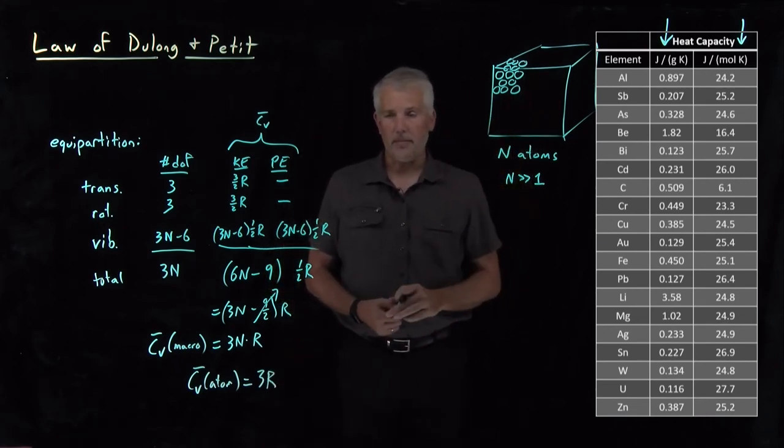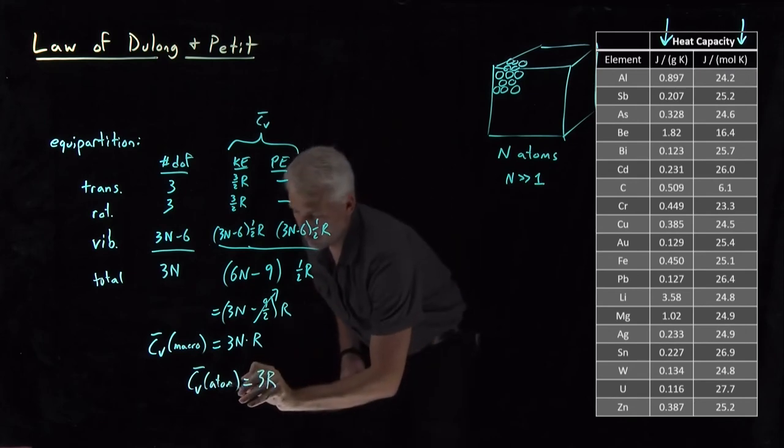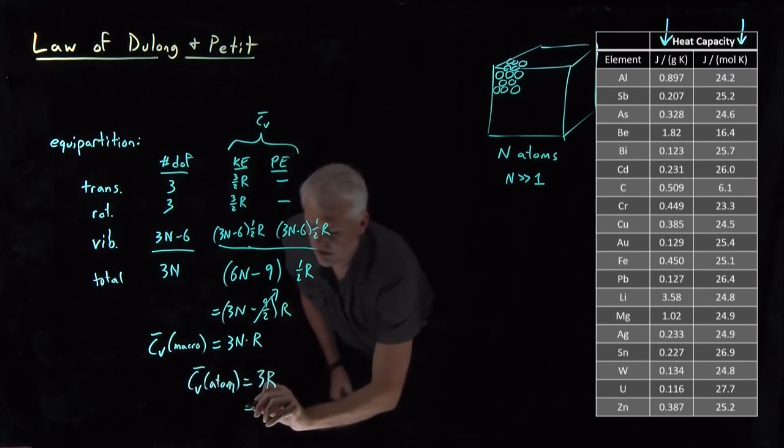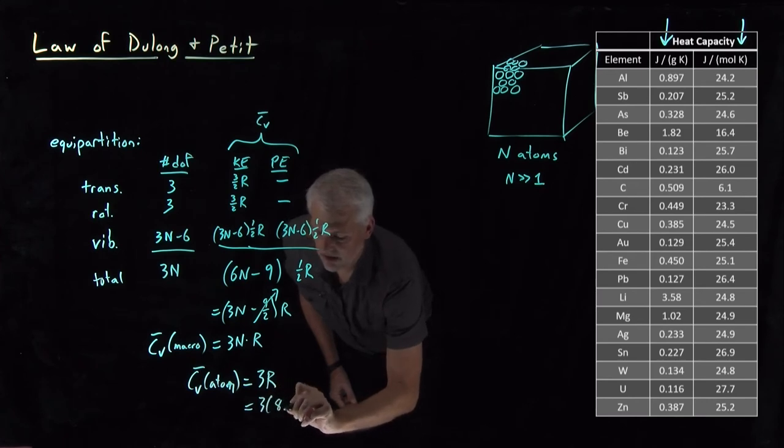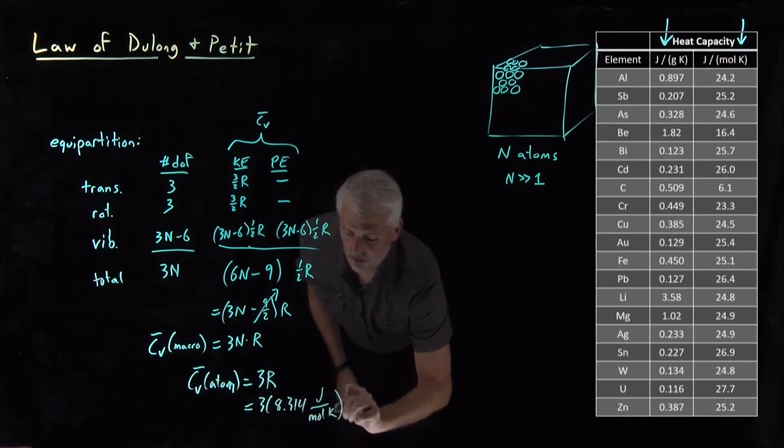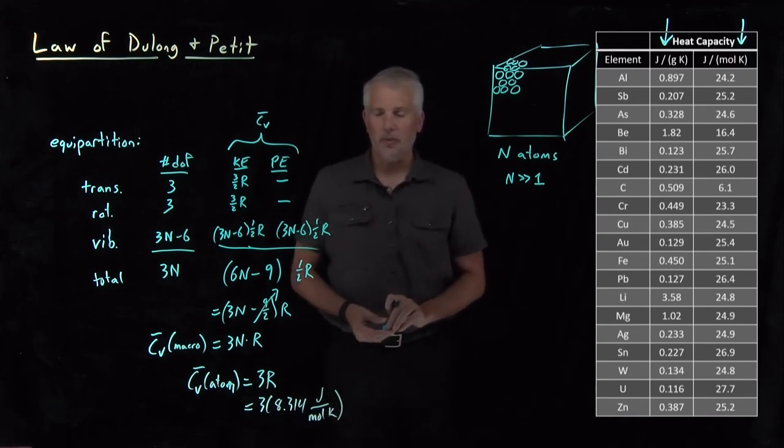So dividing by the total number of atoms. 3 times R, of course, is 3 times the gas constant in units of joules per mole Kelvin. That would be 8.3 joules per mole Kelvin.